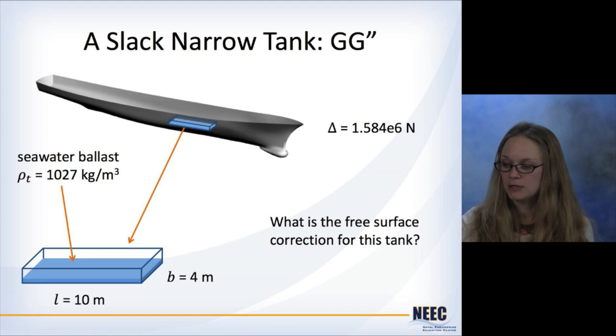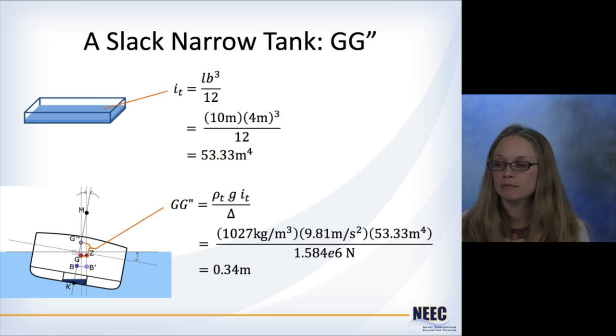take the same thing. The seawater ballast again, weight of the ship has not changed. But the length of the tank now is 10 meters and the beam is only 4 meters. We're going to see what this means in terms of the free surface correction. So we're going to use the same equation, length times beam cubed divided by 12. But remember, now the numbers are reversed. So the length is now 10 meters and the beam is 4 meters.